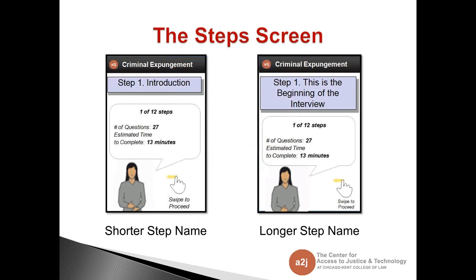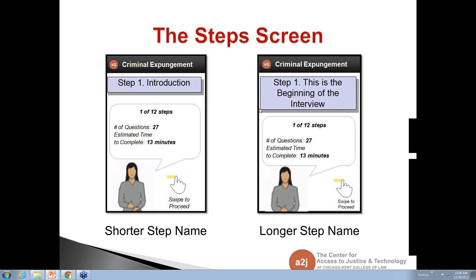The next screen is the step screen. This is new to mobile — it's not in our standard A2J Author computer browser, but we felt it's needed for the mobile version. It anchors users between the steps, showing what step they're on, how many questions are in that step, and an estimated time to complete it. On the left is a shorter step name; on the right is a longer step name that may need tweaking.